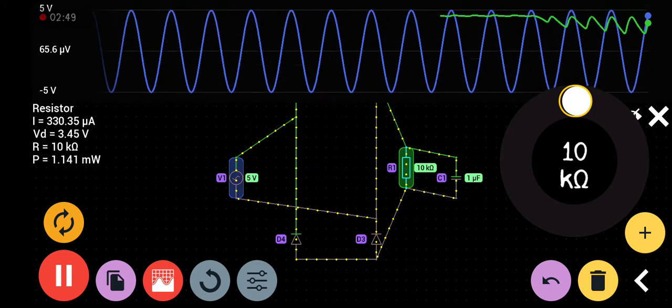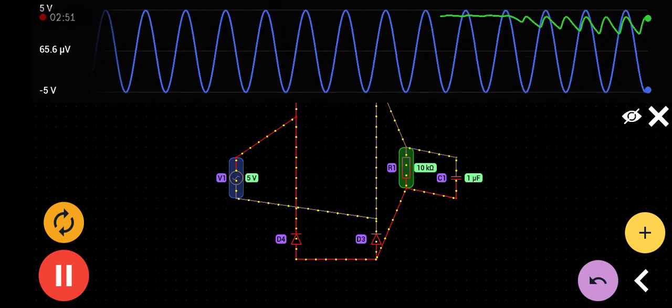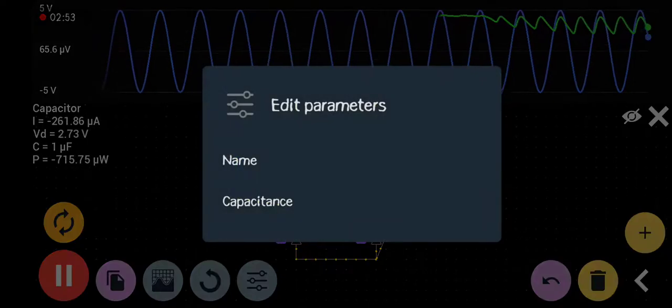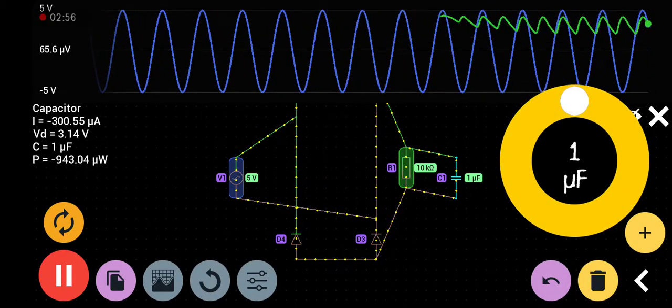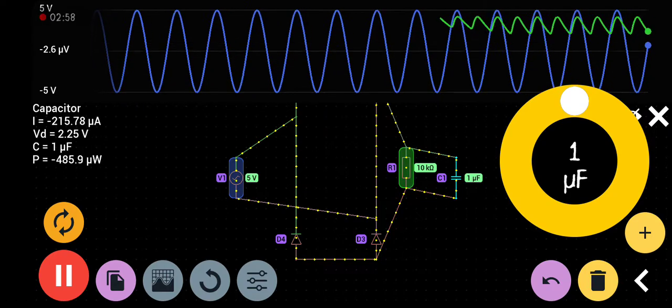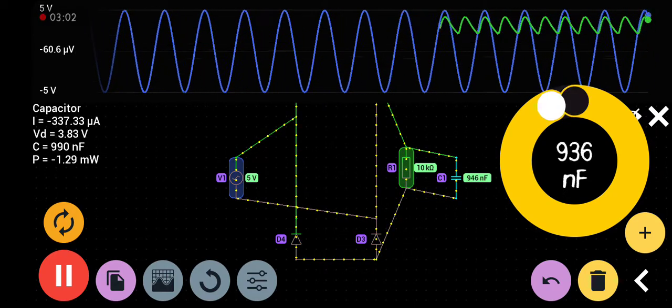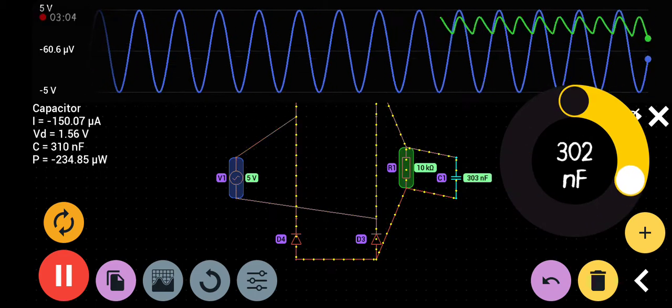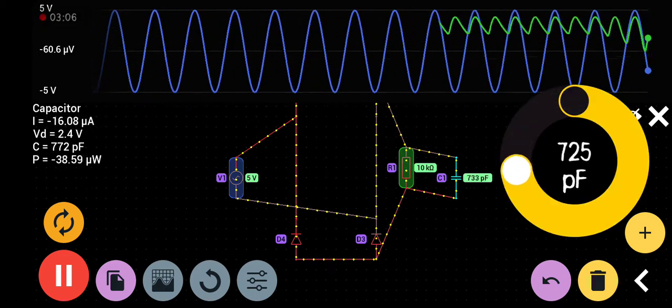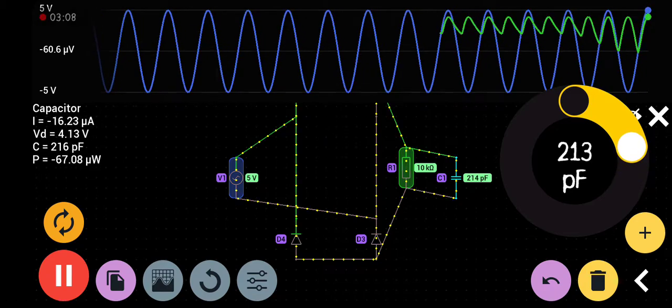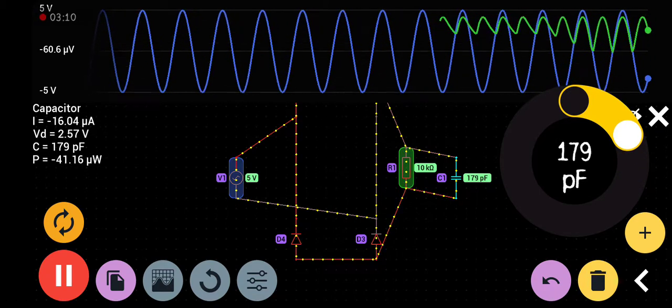Starting with 1 microfarad capacitance. If we reduce the capacitor, what will change? If we reduce the capacitance, you can see more ripples are produced on the output. The green line is showing the output.